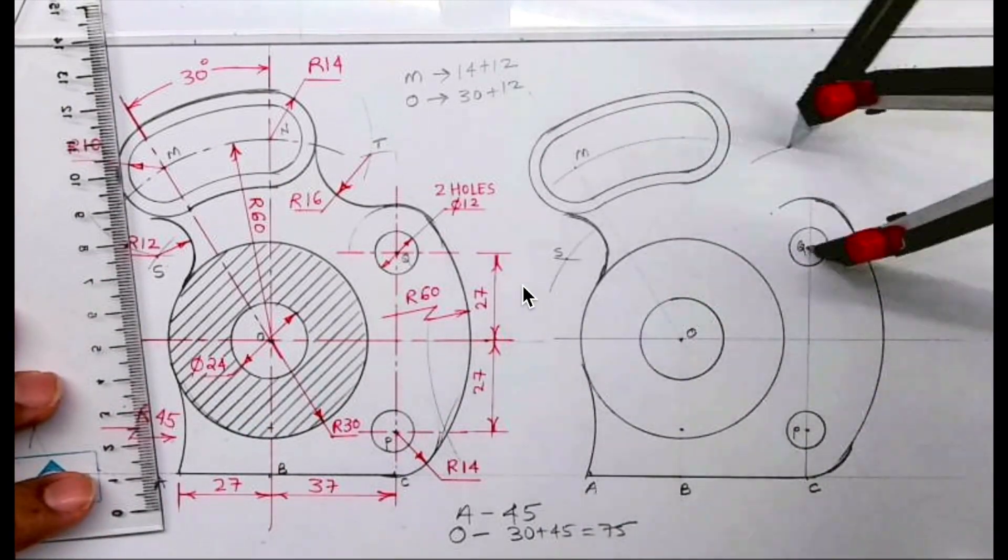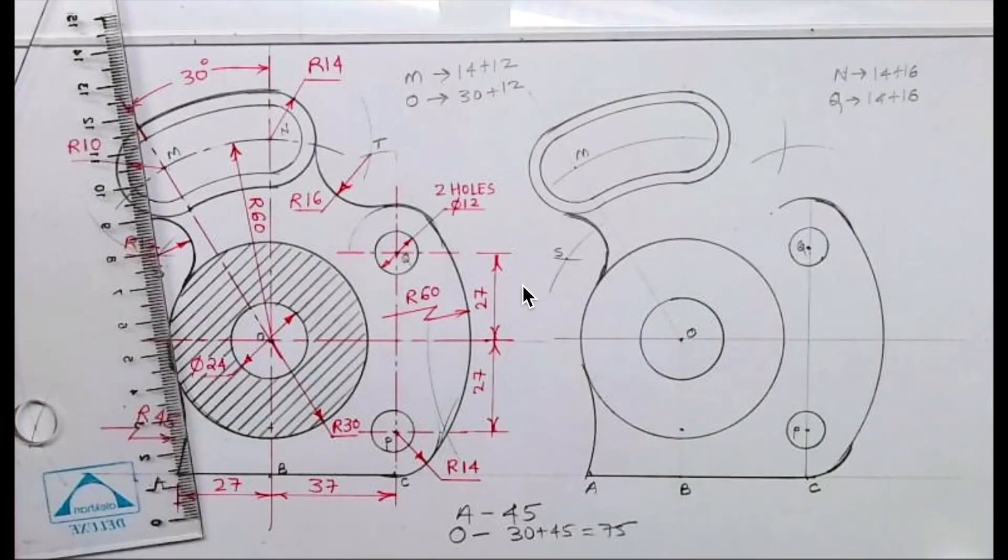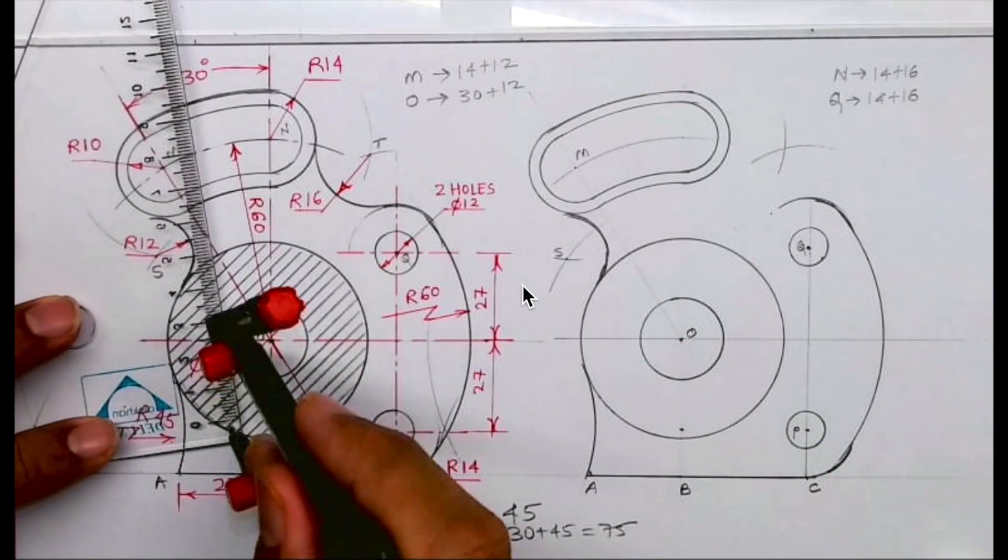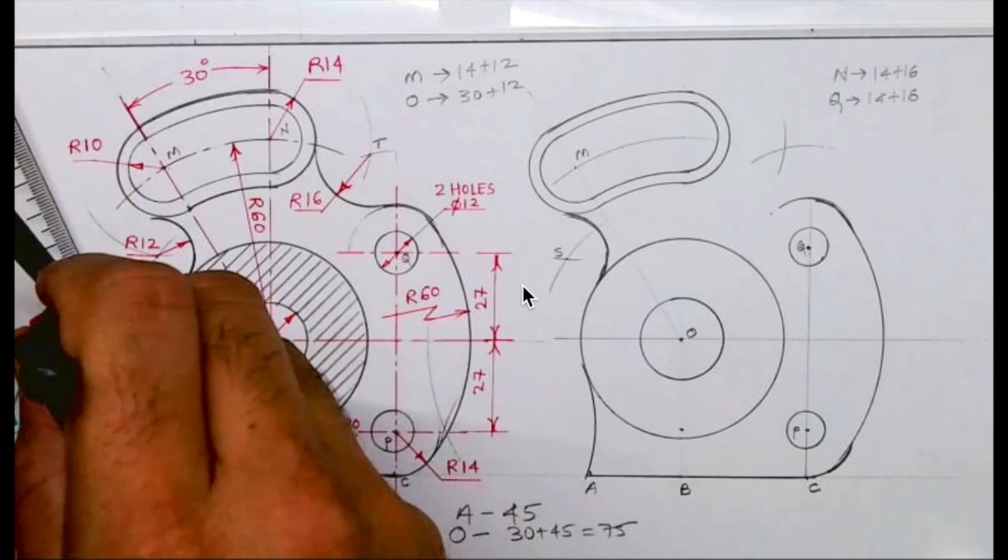From both N and Q you cut 30. Wherever they intersect, from that point we can draw 16.